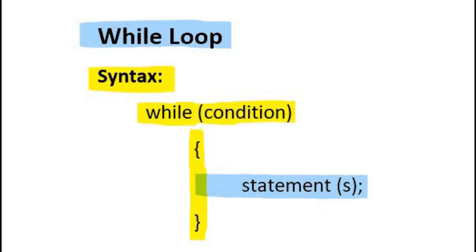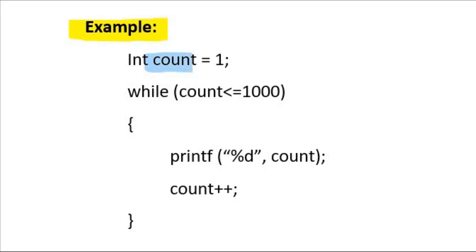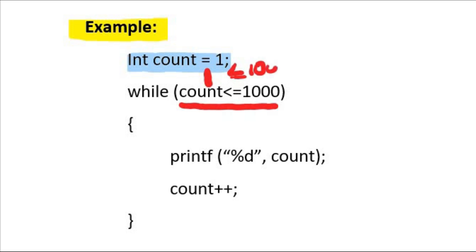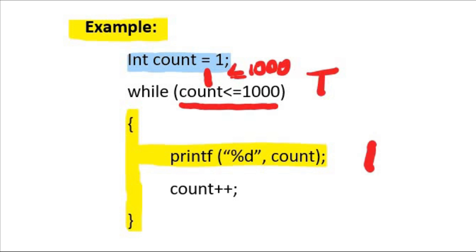Let's understand the working of while loop with the help of an example. It's an integer type count variable which is initialized with value 1. Count is equal to 1. Then comes the while loop and this is the condition: count is less than or equal to 1000. While count is less than or equal to 1000, execute the body of while loop. The body contains two statements. The value of count is 1, and 1 is less than or equal to 1000, so the condition is true. The body will execute, printing the count variable on the output screen. The second statement is count++, incrementing count by 1. So 1 plus 1 equals 2.